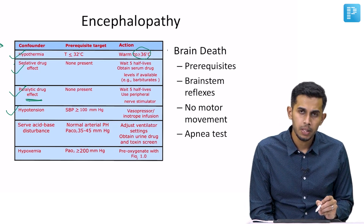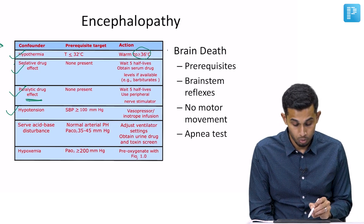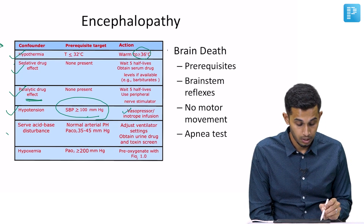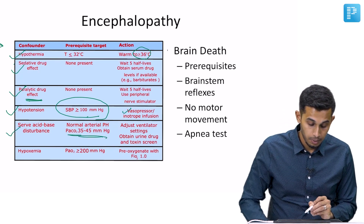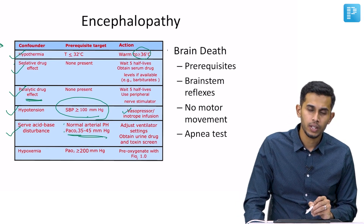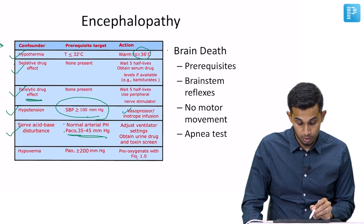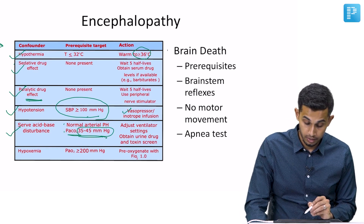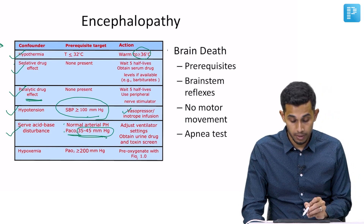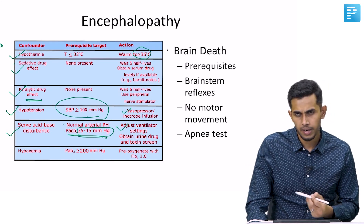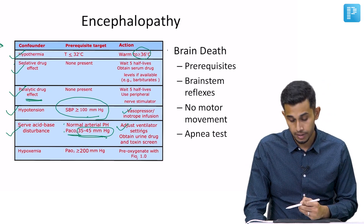The patient's BP should be more than 100; if required, vasopressors can be used. Next, the arterial pH should be normal, and PaCO2 in the ABG should be 35 to 45. This can be managed with the ventilator settings.